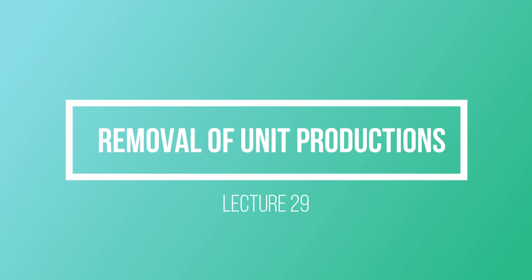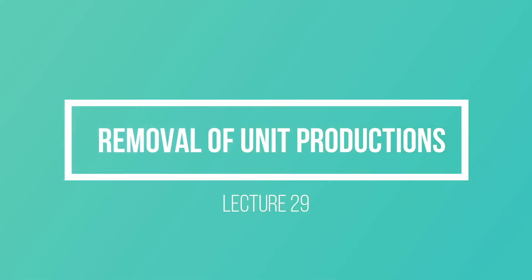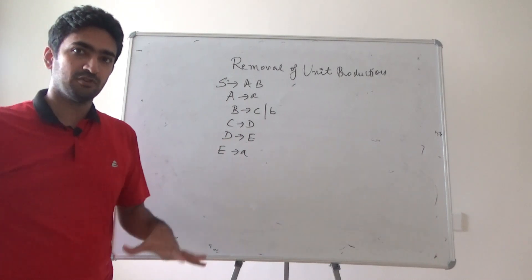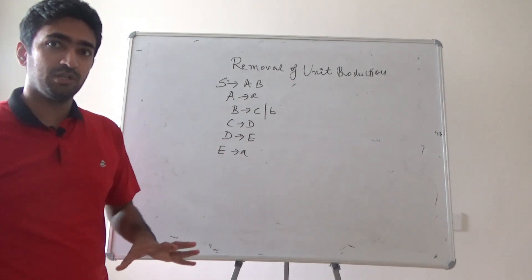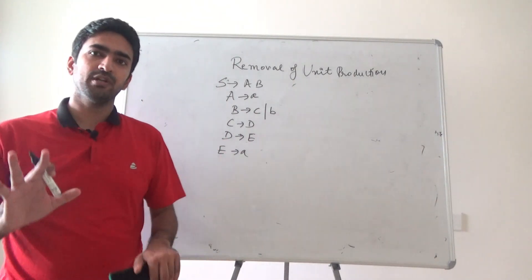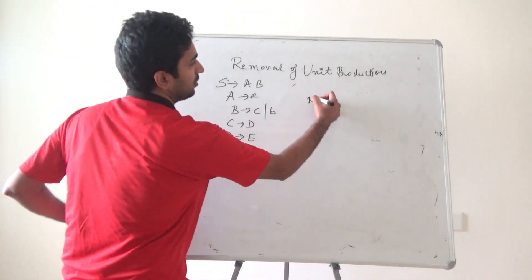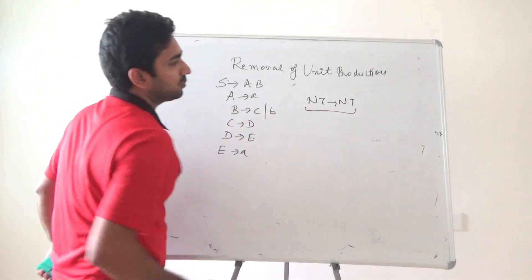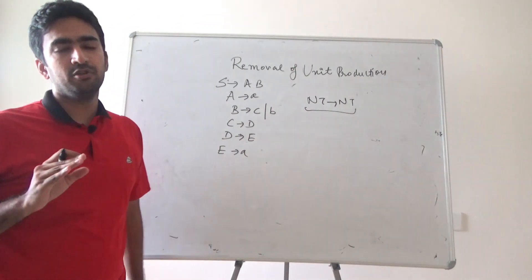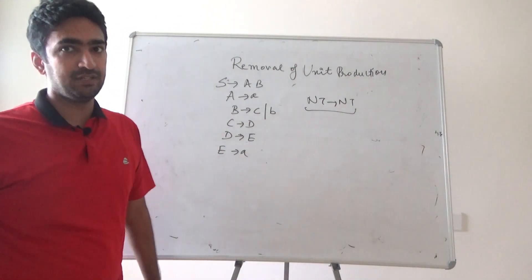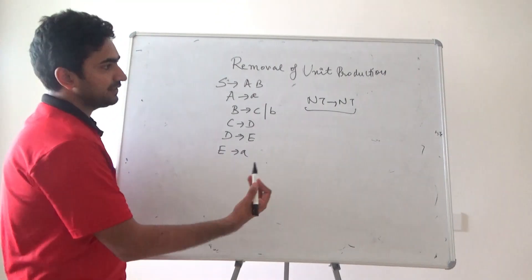In today's video we'll be removing unit production from a particular grammar. A unit production is a production where a single non-terminal generates another non-terminal. The elimination of unit production is done because of transitivity.